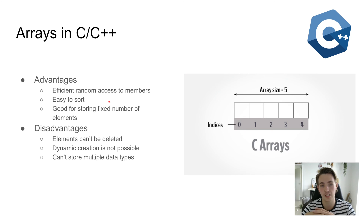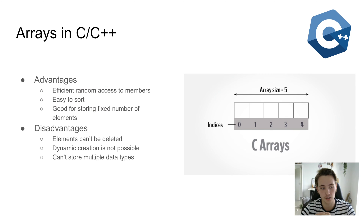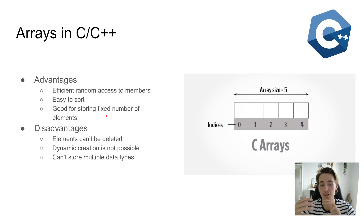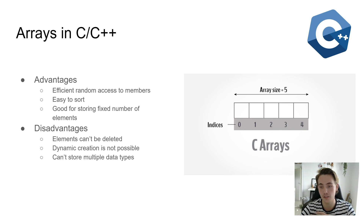Some advantages of using ordinary arrays in C and C++ are efficient random access to members. They're also easy to sort, and they're good for storing a fixed number of elements. So if we have some predefined number of elements to store, C arrays can work fine. However, if we want to resize or add elements to our data structure, we'll run into problems with ordinary C arrays.